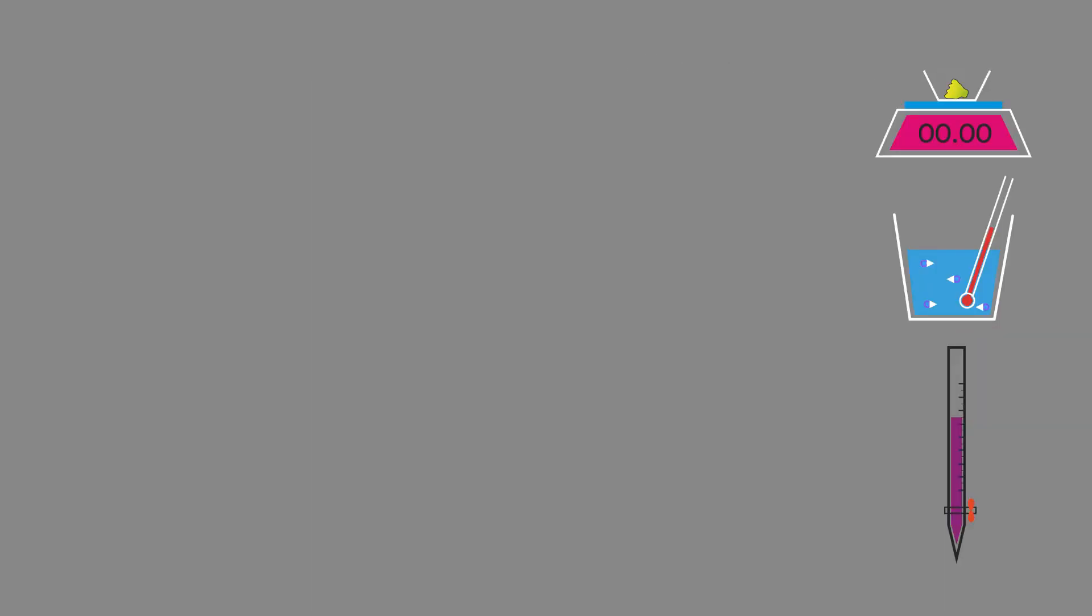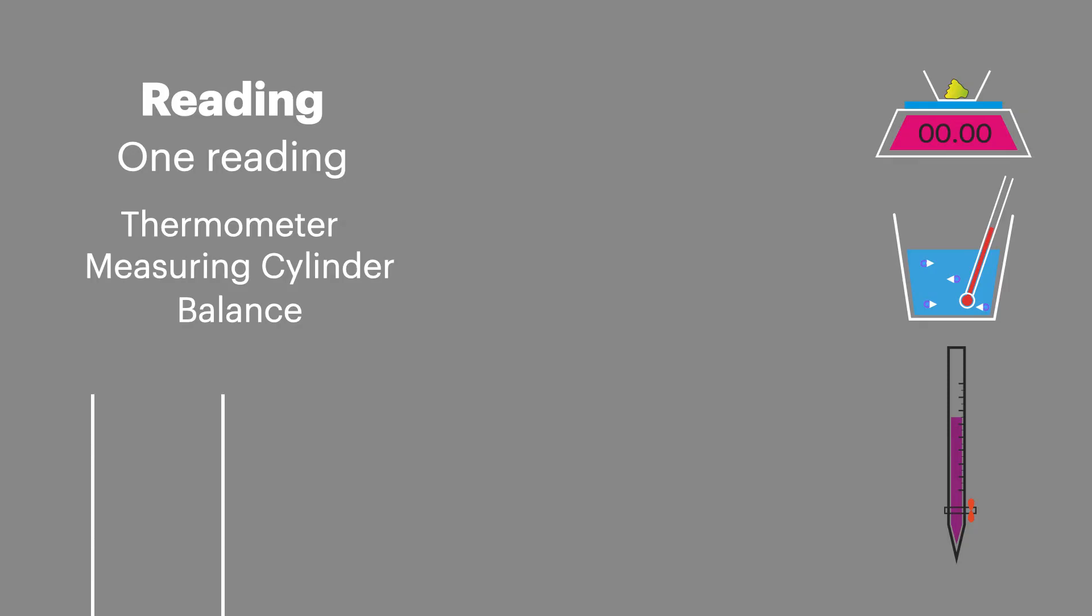When thinking about the impact of uncertainty on our recorded values, we have to look at how many times we take a reading using the equipment. If it's a simple one-off reading, such as reading a temperature off a thermometer, a mass off a balance, or the volume from a measuring cylinder, we only have to consider the uncertainty once.